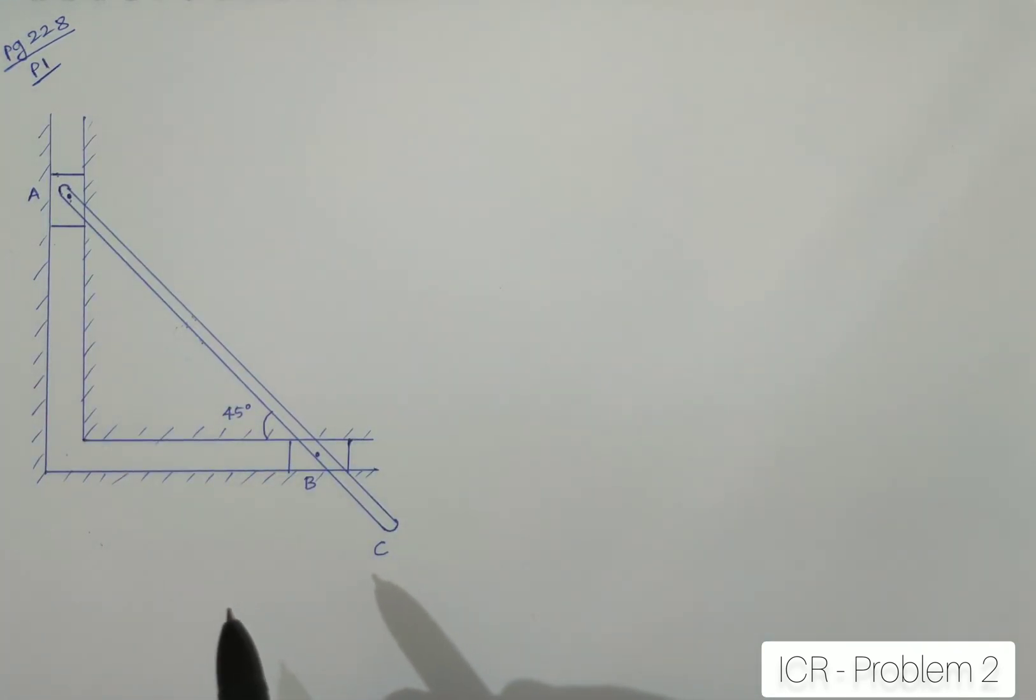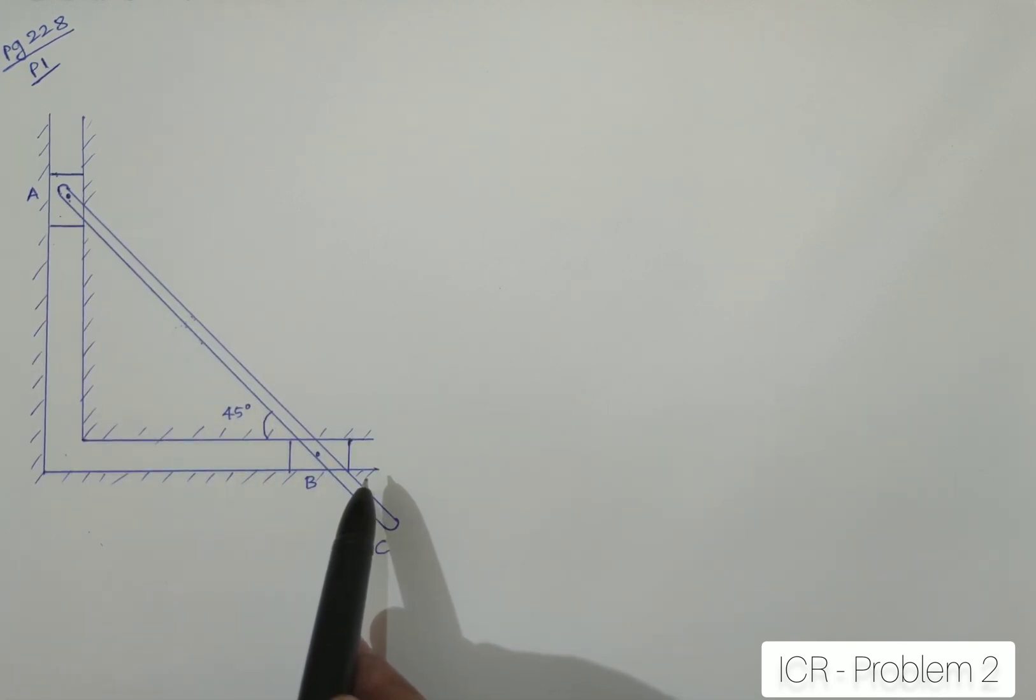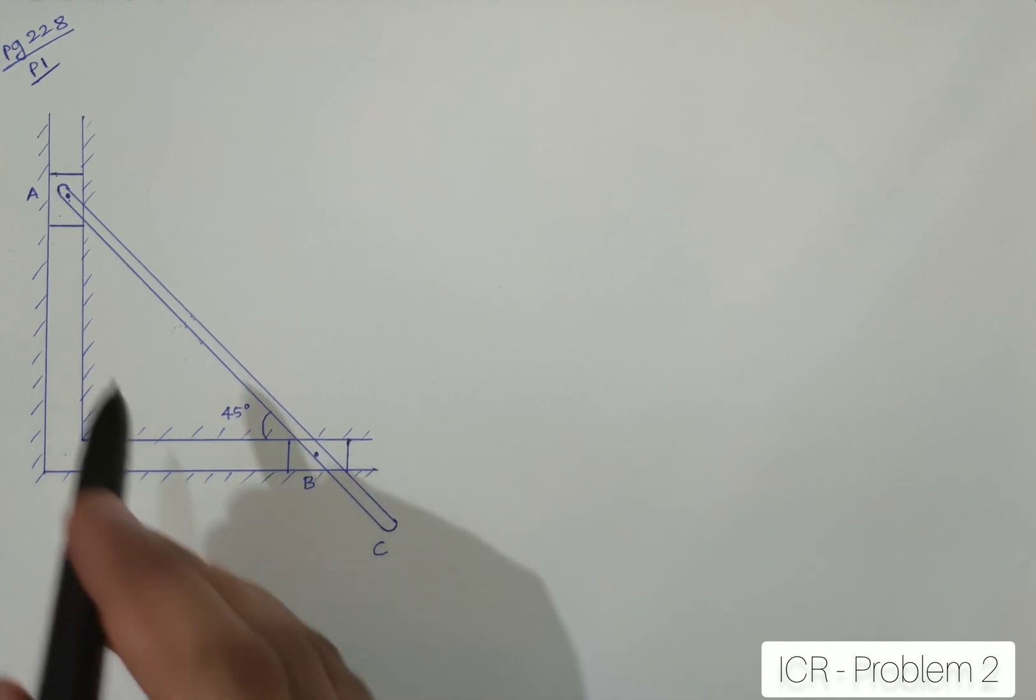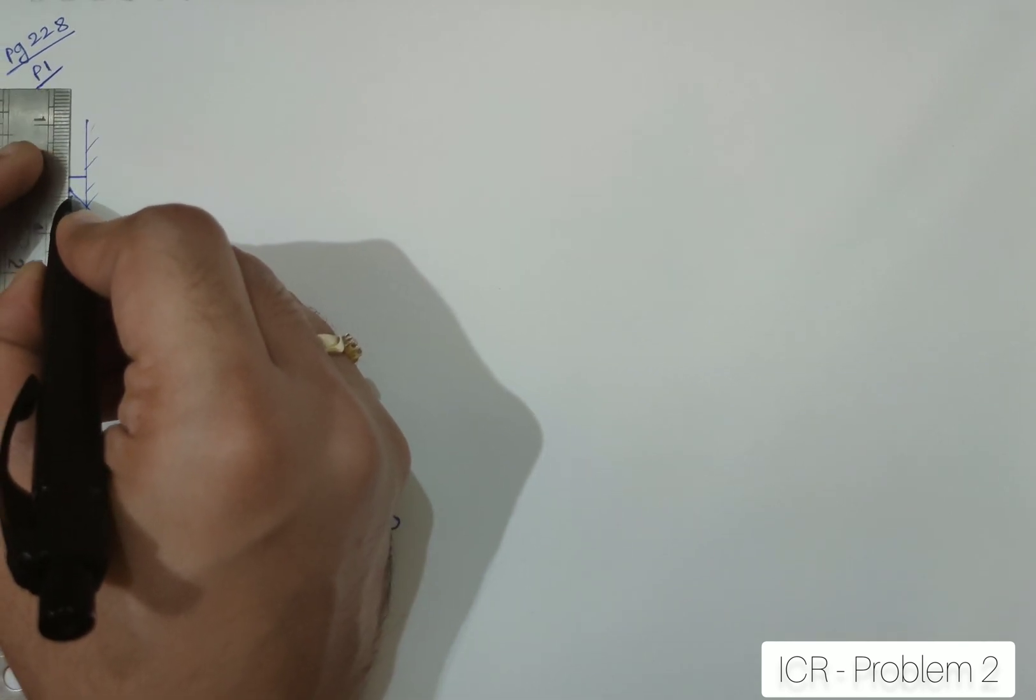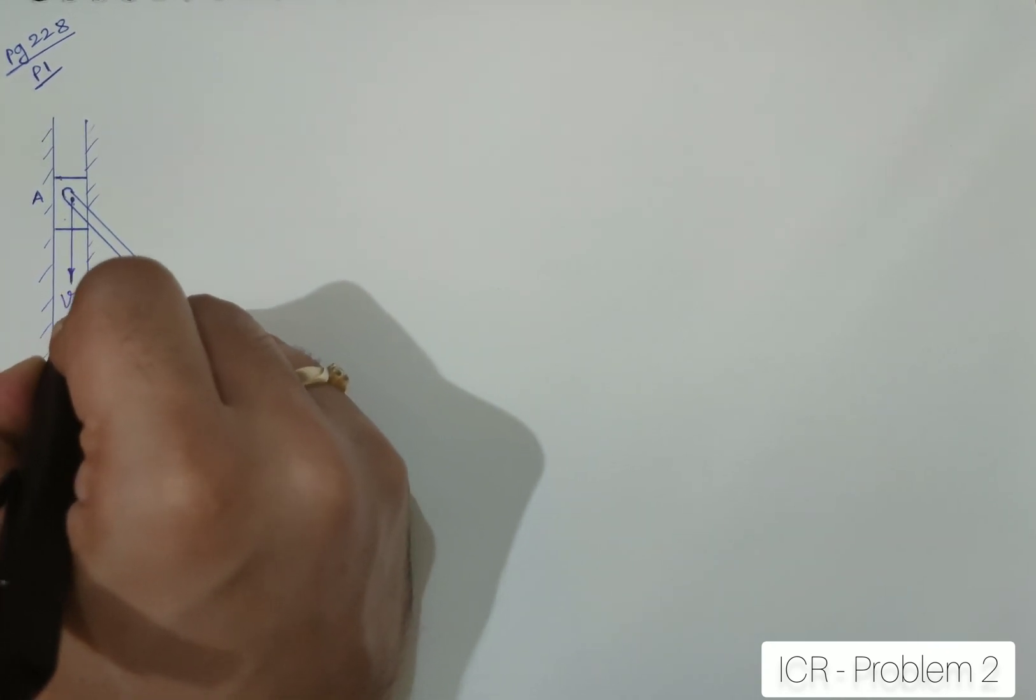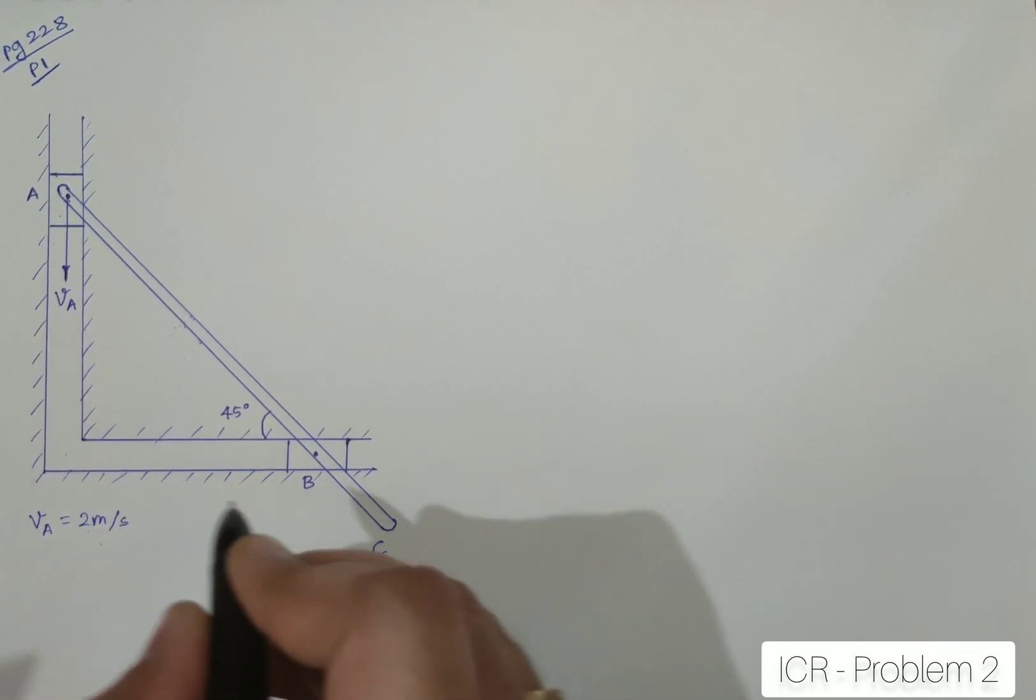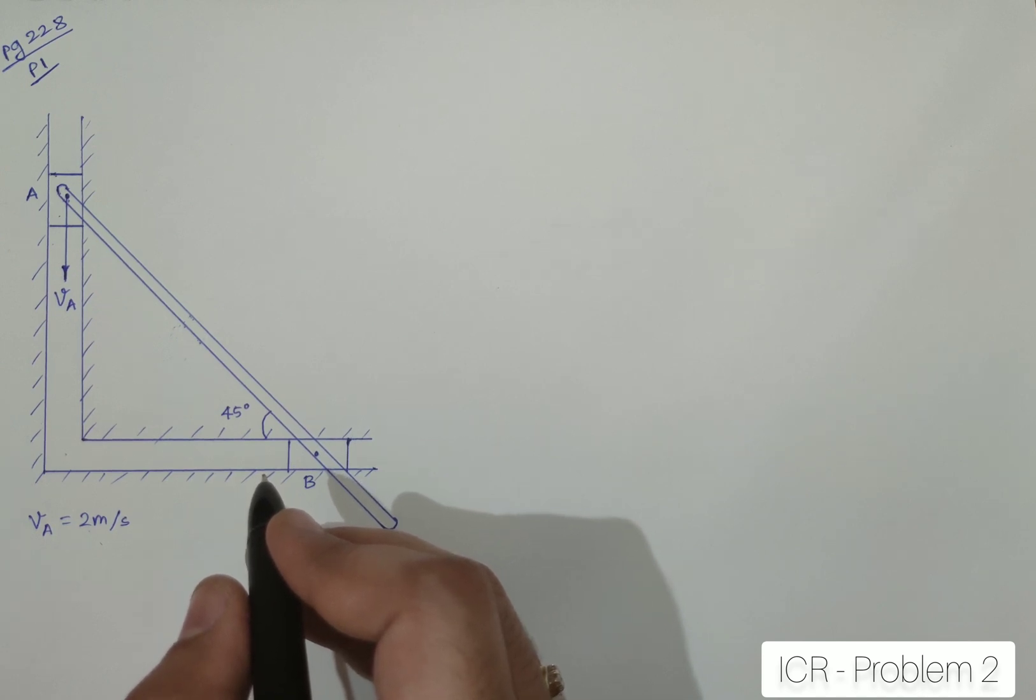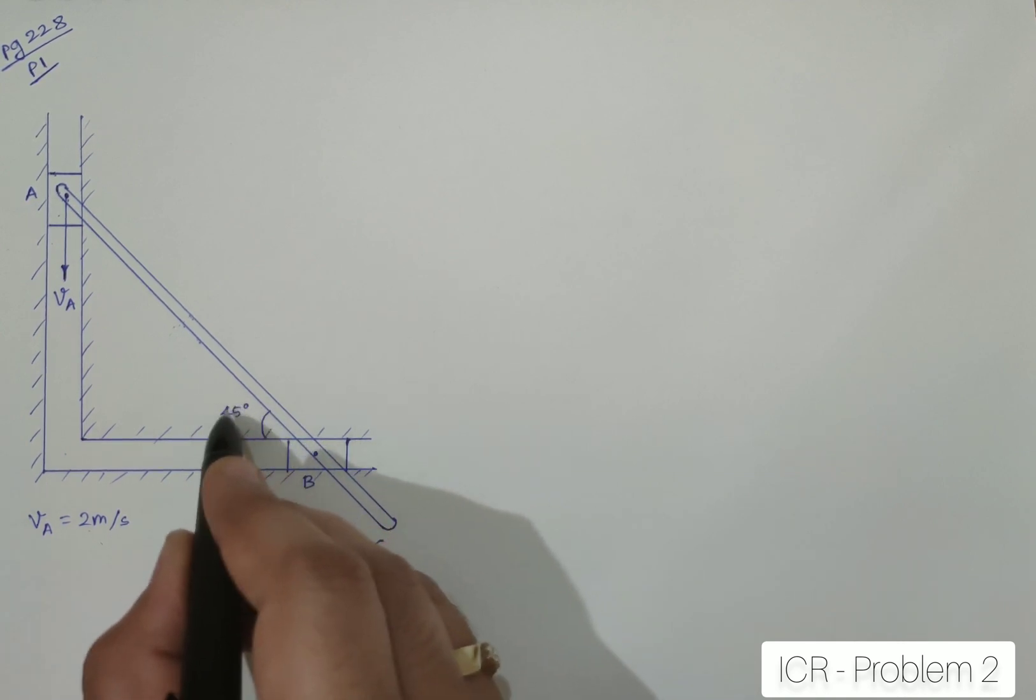In this, the question is given as: as shown in the figure, the link is guided by the two blocks at A and B. The link is definitely AC, which will be moving in the fixed slots. If the velocity of VA, they have given the velocity VA, which is downwards 2 meters per second, they want you to find out the velocity of the point B or the slider B when the entire setup is at 45 degrees.